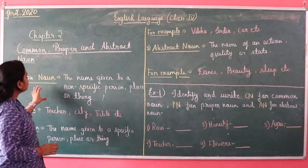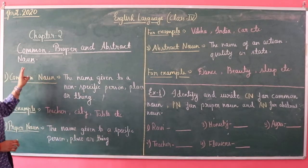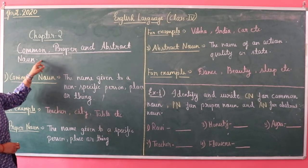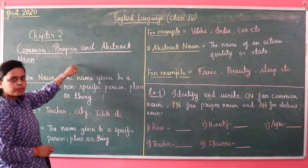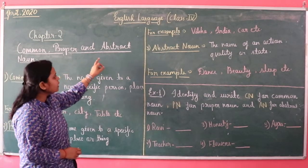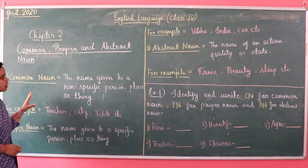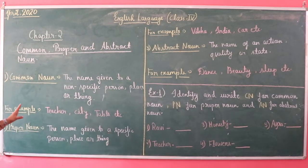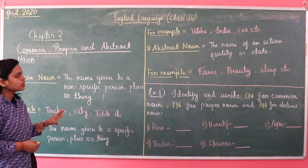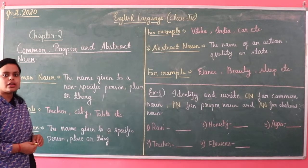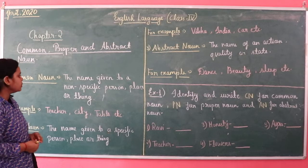In the second chapter, there are three kinds of noun: common noun, proper noun, and abstract noun. We are going to discuss the definition of each kind of noun with examples.